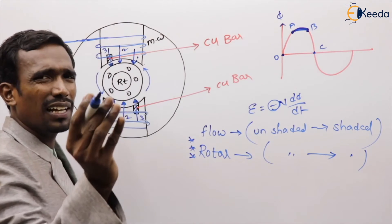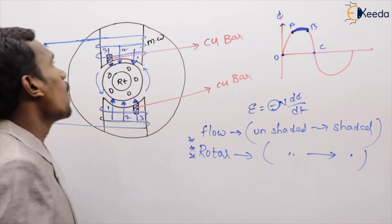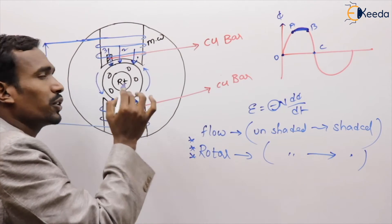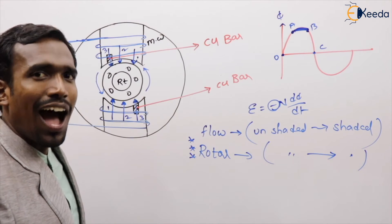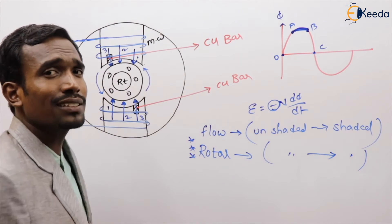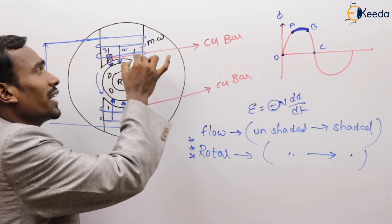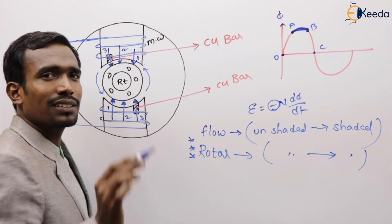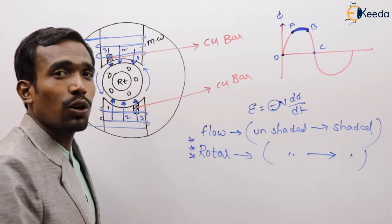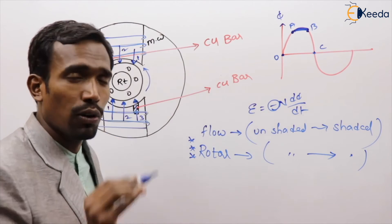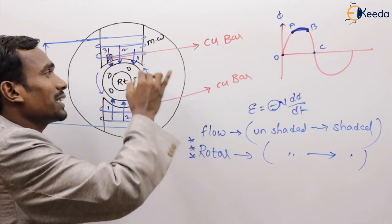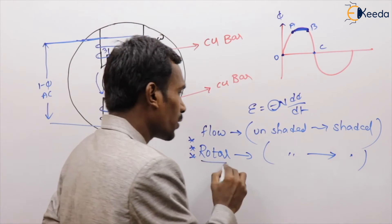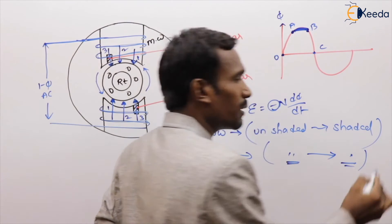In summary: when single phase AC is applied to the main winding, due to mutual induction the flux will produce in the shaded rings, and due to Lenz's law the flux flows from the unshaded part to the shaded part of the main poles. This movement of flux is assumed by the rotor as a physical movement of poles. Due to physical movement of poles, the rotor also rotates in the same direction — from the unshaded part to the shaded part of the main pole.